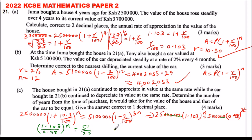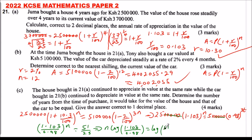We can now take logarithms. This implies N × log(1.103/0.98) equals log(51/25). So N equals log(2.04) divided by log(1.103 divided by 0.98).